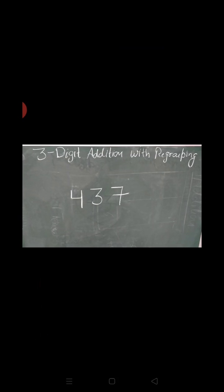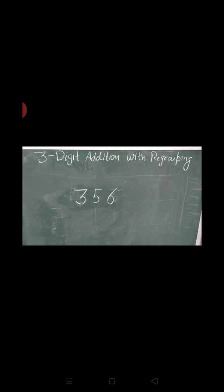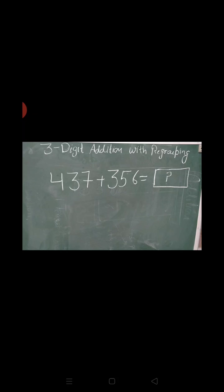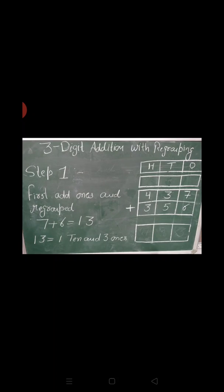We start our chapter with three digit addition with regrouping. Our first number is 437 and the second number is 356. When we add both these numbers — 437 plus 356 — we do our question step by step. In the first step, you can clearly see 7 and 6 are on the ones place. First we add ones and regroup. When we add, 7 plus 6 is equal to 13.